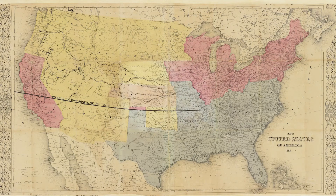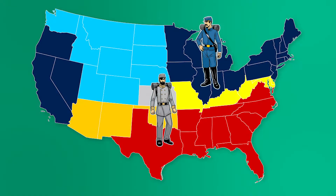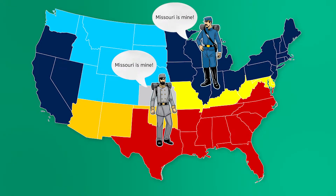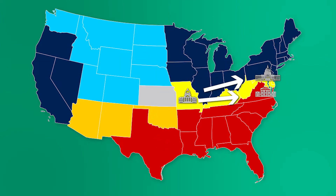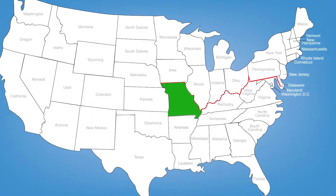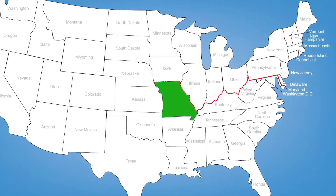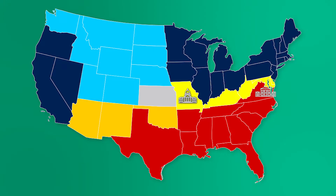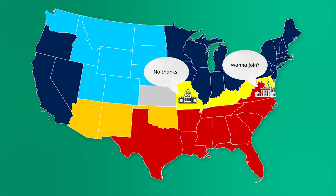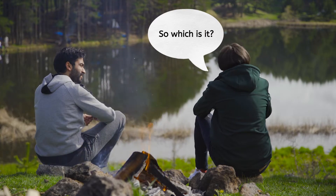Let's look at Missouri's history. Missouri was admitted to the Union as a slave state in 1820 — that would suggest it's a southern state. But during the Civil War, Missouri was claimed by both the Union and the Confederacy, and it sent delegates to both of their legislatures. Missouri is below the Mason-Dixon line, so clearly it's southern. And yet Missouri never joined the Confederacy, so maybe it's not.